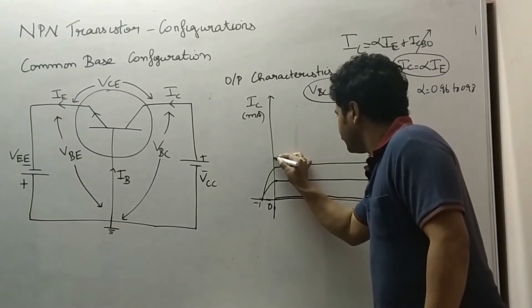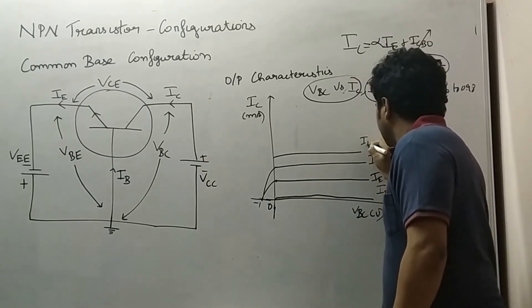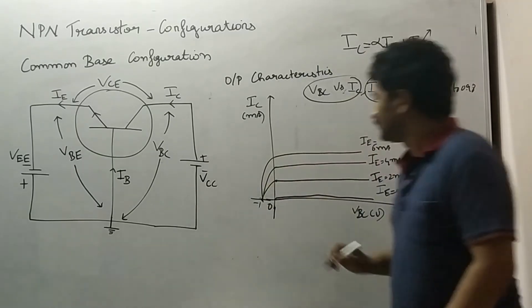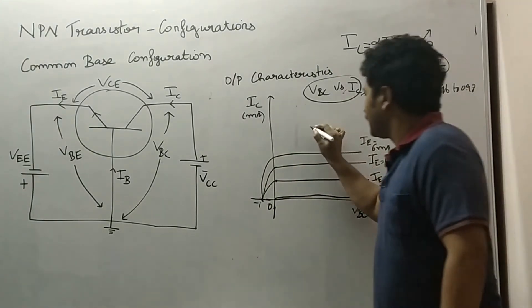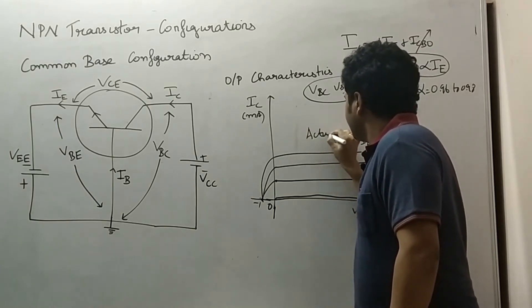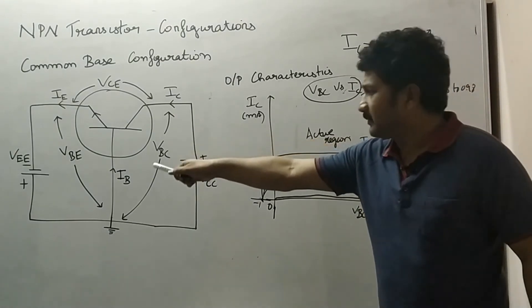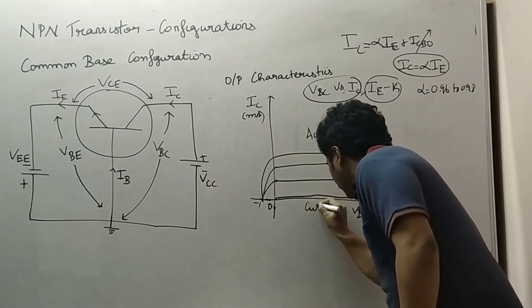Just like the CE configuration, here also we can mark the active region where base emitter is forward biased and base collector is reverse biased. This is the cutoff region.